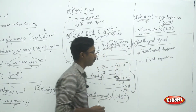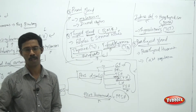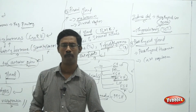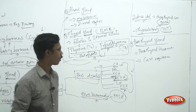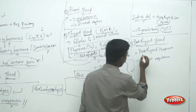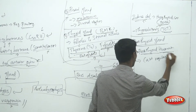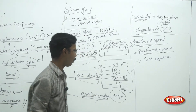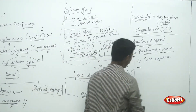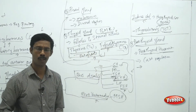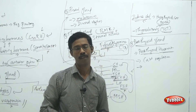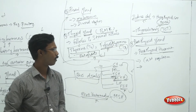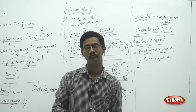The parathyroid gland is situated just behind the thyroid gland. It secretes parathyroid hormone (PTH), which is also involved in calcium regulation — specifically in the reabsorption of calcium ions and the deposition of calcium into the bones.